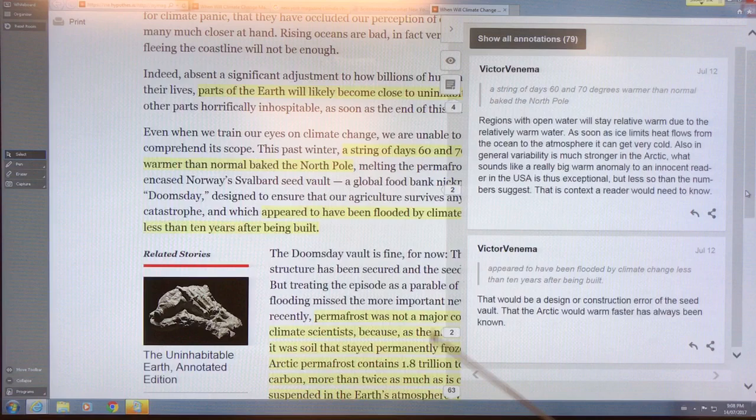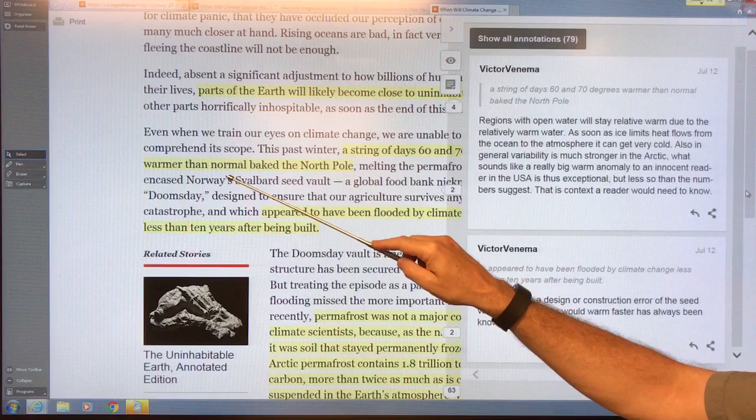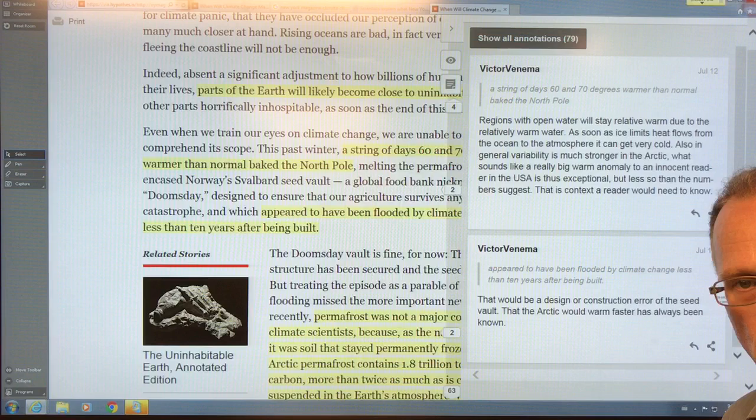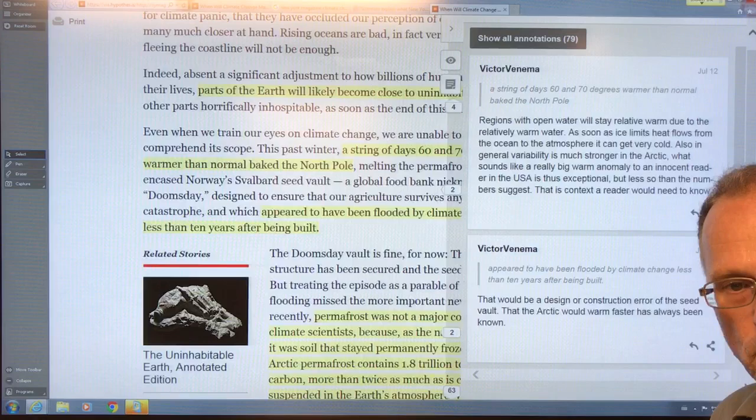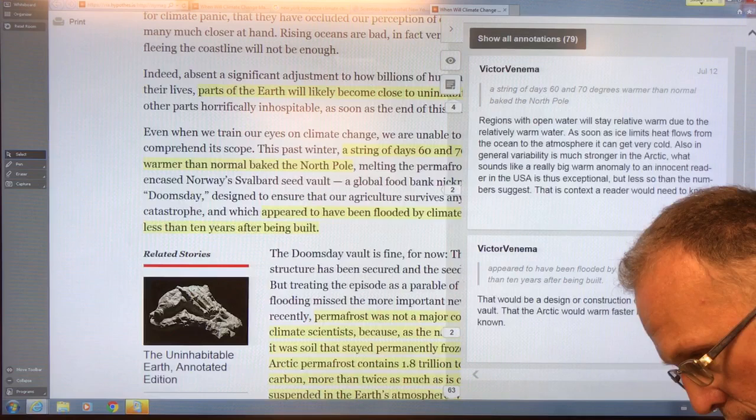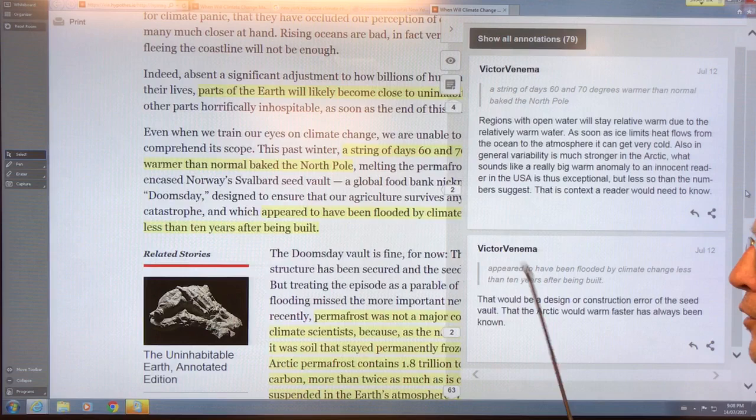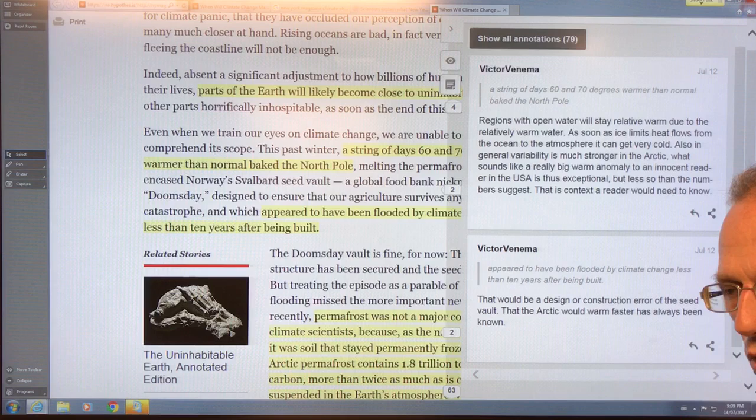The comment in the paper mentioned a string of days 60 to 70 degrees Fahrenheit warmer than normal. At the North Pole we've seen incredible temperature variability, with whole sections being 40 degrees Celsius warmer than normal - multiply by 1.8 and that's 70-72 degrees Fahrenheit warmer than normal over the North Pole. This has persisted for months at a time over specific regions, mostly over regions that used to have sea ice and no longer have sea ice covering.